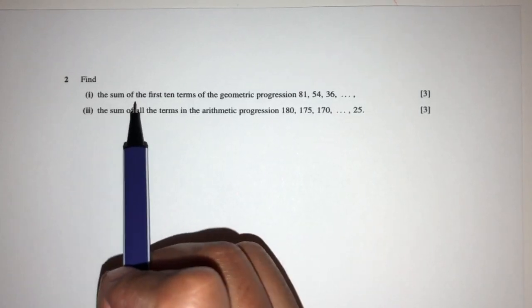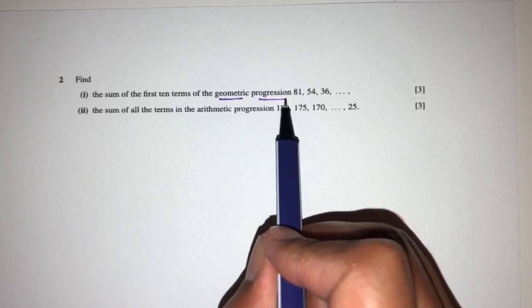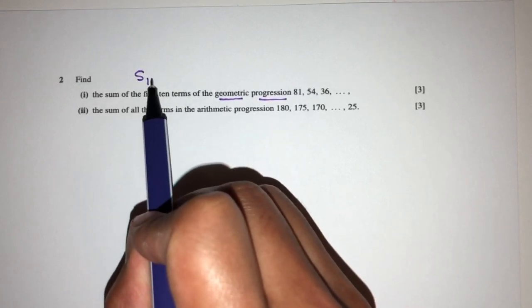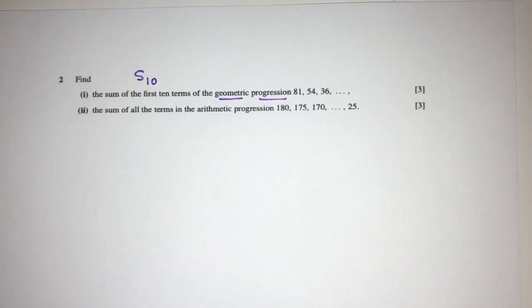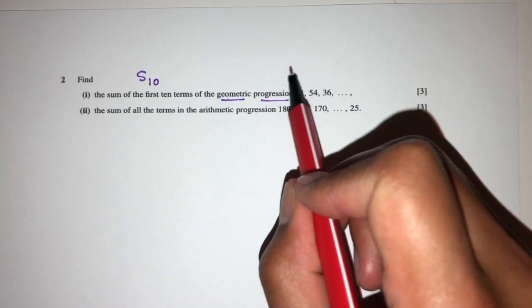Now, in this question, part one, we have to find the sum of the first 10 terms of this geometric progression. So, the sum of the first 10 terms of this progression. Let's see. We have 81, 54, 36. What is the common ratio?